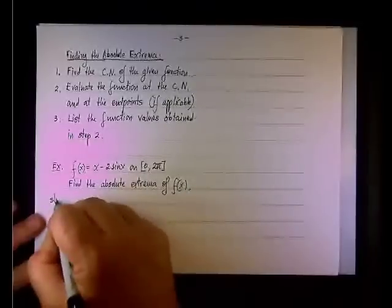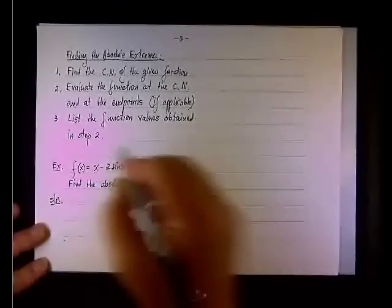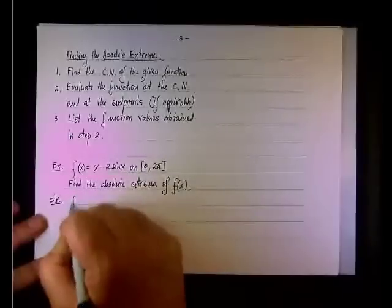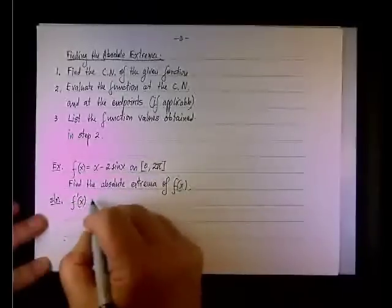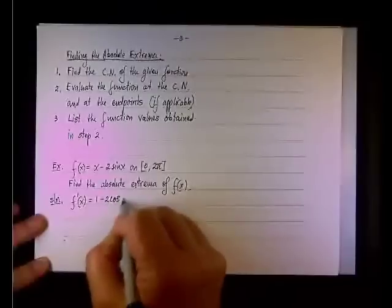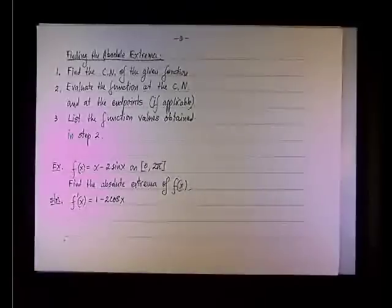So basically, we're going to follow the procedure listed above, and we're going to say the first step is let's find critical numbers. To do so, we need to find the derivative. In this case, it's fairly easy: one minus two cosine x, and we want first to let it equal zero.